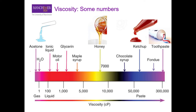To give some numbers that help visualize viscosity: water has a viscosity of 1 centipoise. Honey has a viscosity of 7,000 cP — meaning it is seven thousand times more viscous than water. Ketchup, which we all know doesn't fly out of a bottle easily, has a viscosity of almost 100,000 cP. Really viscous fluids like toothpaste have a viscosity of around 300,000 cP — three hundred thousand times more viscous than water.